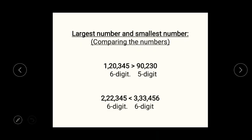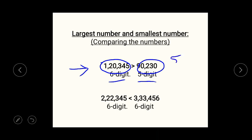The last simple topic of this video is the largest number and the smallest number. If two numbers are given, how do we compare which number is largest or which is smallest? In our first example, one number is of 6 digits and another number is of 5 digits. Here we can say that the 6-digit number is greater than the 5-digit number. Similarly, if we have a 5-digit number and a 4-digit number, obviously the 5-digit number will be greater.